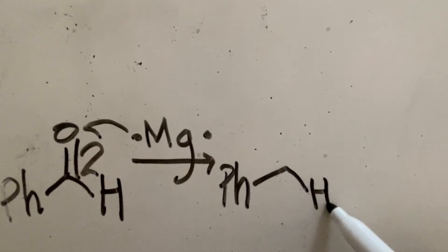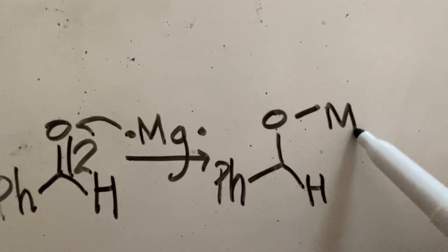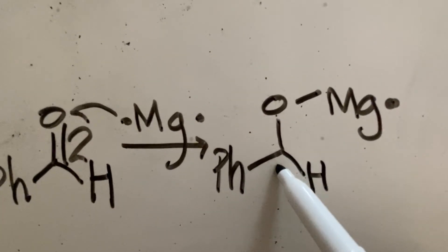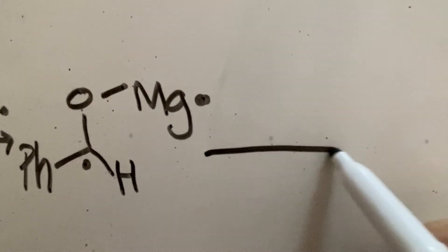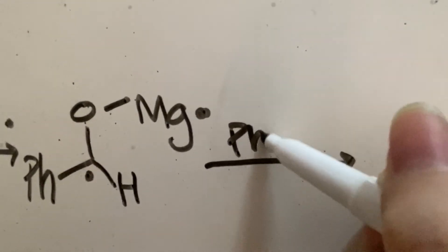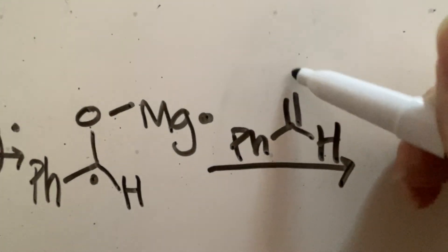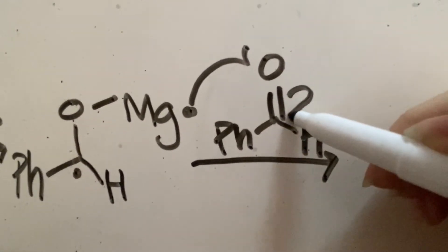Now, this is the product, and as we can see, the magnesium still has an electron. This molecule then reacts with another benzaldehyde, and we see the same reaction. The electron on the magnesium attacks the oxygen, and once again, the carbon gains another electron.